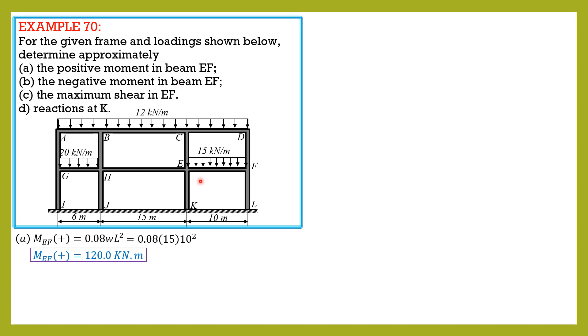The negative moment in beam EF is 0.045WL², and W is still 15 and length is 10. So 0.045WL² gives us the negative moment in EF of 67.5 kilonewton-meters.